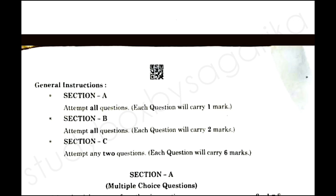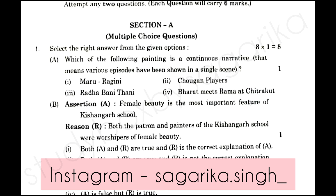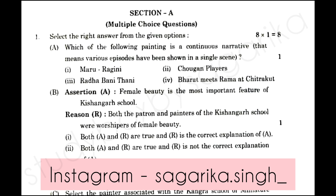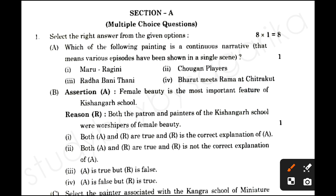Today we are discussing this paper. I will send my paper screenshots on Instagram. The first question is: which of the following is the continuous narrative? Narrative meaning a story where you are telling the episodes. In this case, the answer is Ramaji Chitrakoot, where we can see how Ramaji came to get from it.